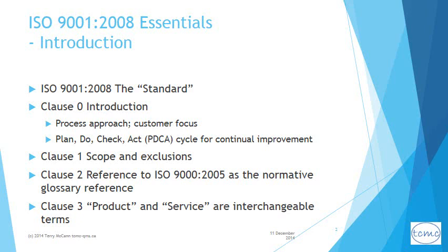Clause 0 is an introduction that briefly describes the process approach adopted by the standard. It takes customer requirements as input and delivers product or services as output for customer satisfaction. There is also an encouragement to use the PDCA, or Plan Do Check Act, methodology for continual quality improvement. Clause 1 covers scope and exclusions; clauses 2 and 3 cover terminology.